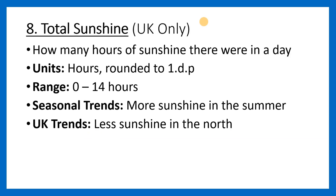The eighth measurement is total sunshine, and the rest of the measurements are only for the UK. This is how many hours of sunshine there were in a day. It's given in hours and rounded to one decimal place. The range of values is between 0 and 14 hours. It's quite interesting that the number can be zero — this happens when there are really thick clouds that stop any sunshine from being recorded. In terms of seasons, there is more sunshine in the summer. In the UK, there is less sunshine as you go north, although this isn't really reflected in the data, but it is scientifically true.